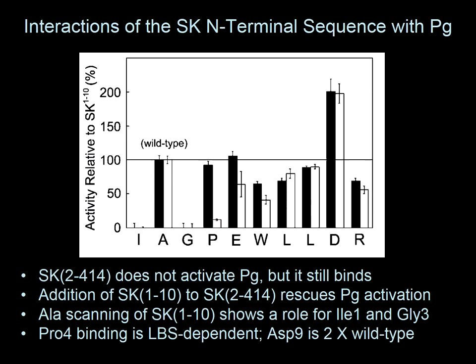That allowed us to do alanine scanning of all 10 residues of the SK N-terminus. When we did that, they didn't all do the same thing. Many were found to be critically important, like isoleucine. Surprisingly, glycine at position 3, proline at position 4, and aspartic acid at position 9 — which was two-fold more effective than wild-type — were particularly notable. This suggests the extended N-terminus plays a role in conformational plasminogen activation.